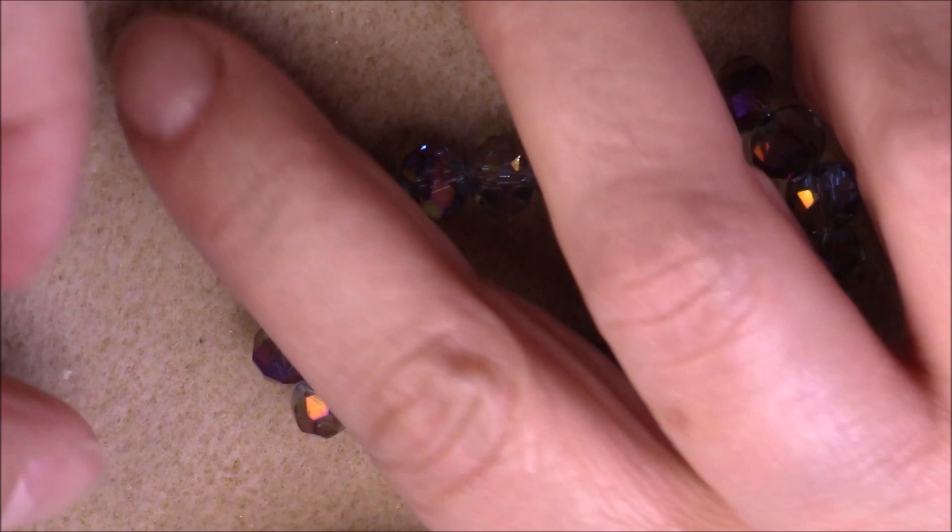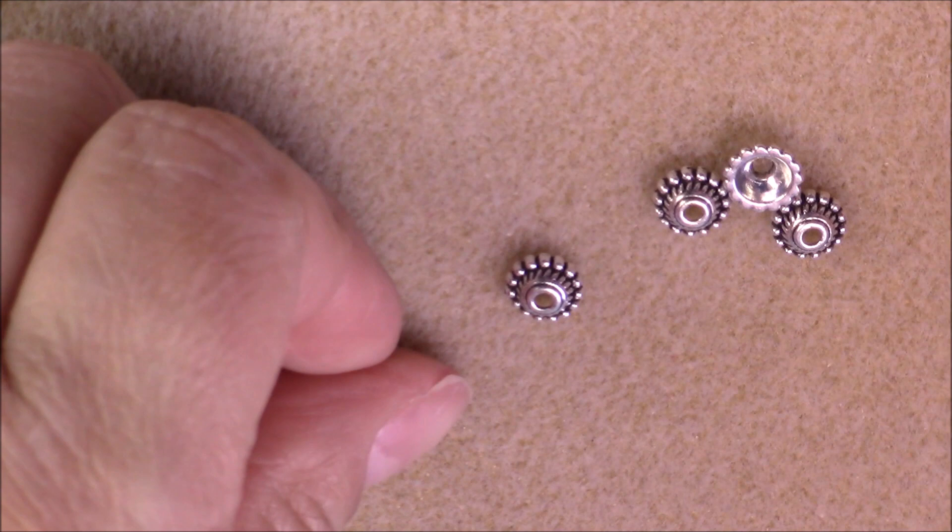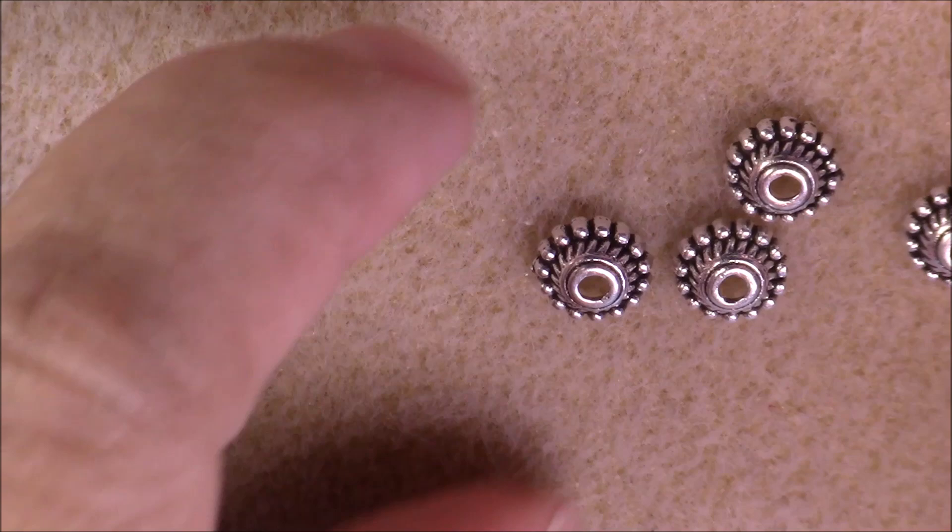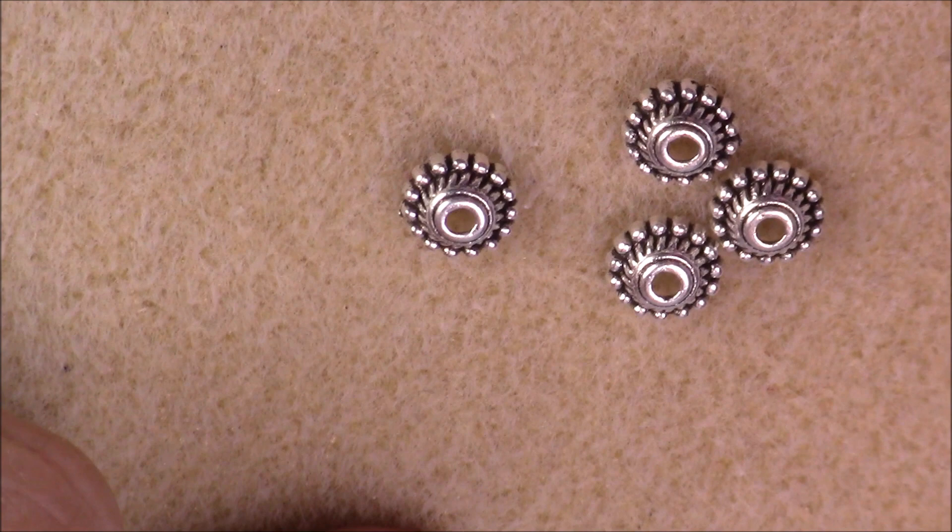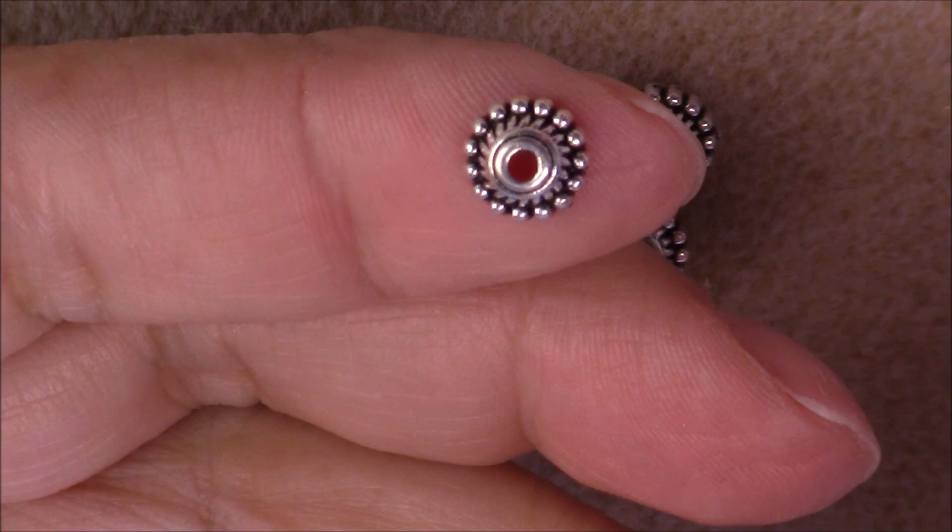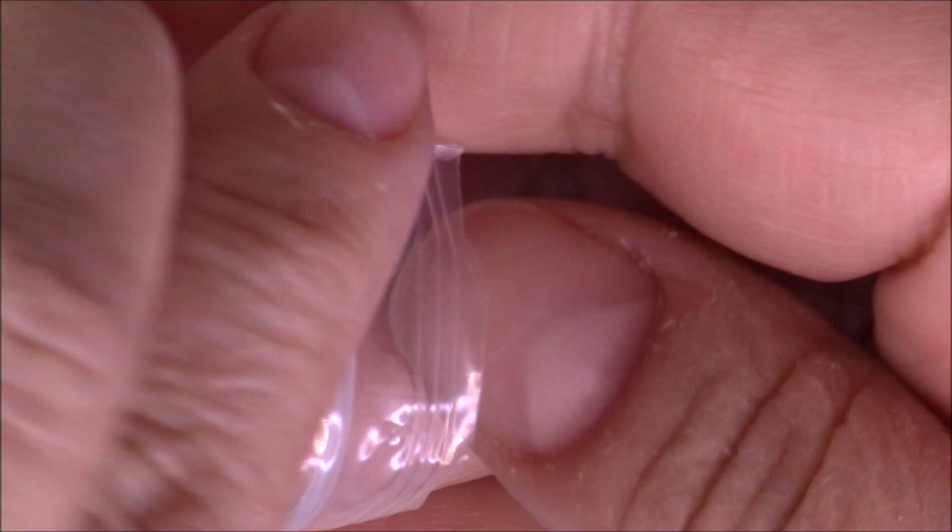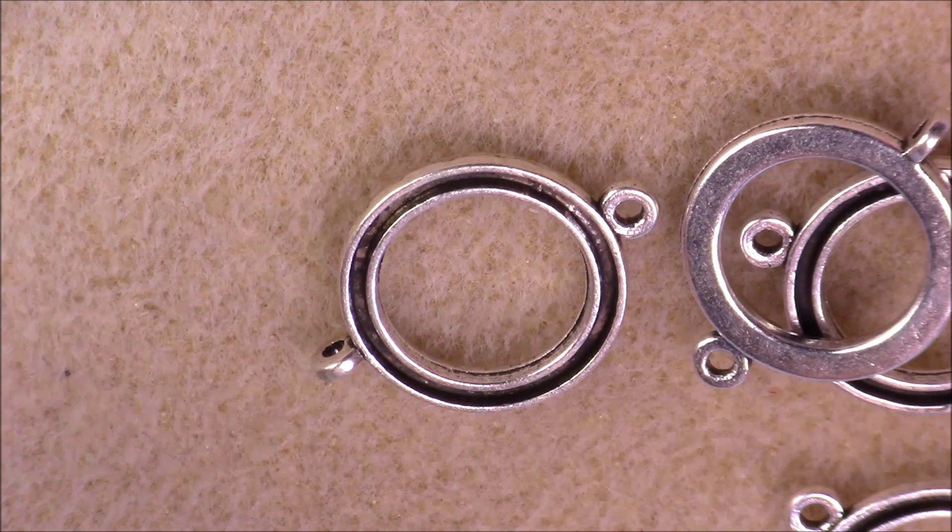Number four, 20-piece, 8mm dotted round bead caps. There you go. They remind me of little hubcaps. And number five, number five is five-piece 26x19mm donut links. These are little links, there we go.